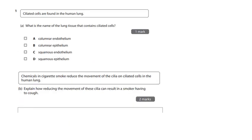So, ciliated cells are found in the human lung. What is the name of the lung tissue that contains ciliated cells? Well, I'll tell you what it is. It's columnar epithelium, is what it is. It's these guys here, they're like these epithelial tissue, and you've got your cilia on the top there. The cilia are like little hairs on the inside of the airway.